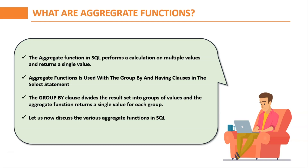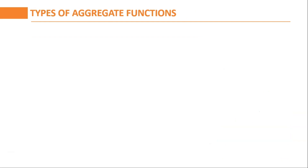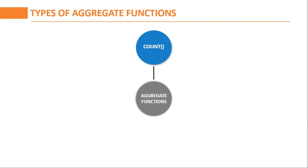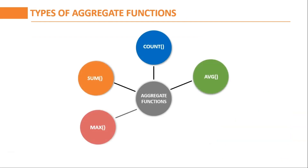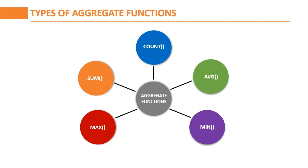Now that we have understood what are aggregate functions, let us go through the various aggregate functions that are present in SQL. In SQL, there are broadly five types of aggregate functions. They are COUNT, SUM, AVERAGE, MAX, and MINIMUM. Let us discuss about them in detail.